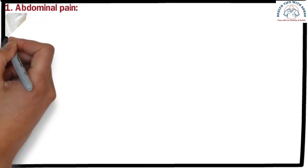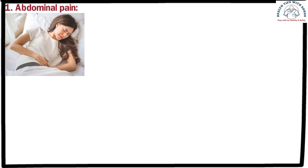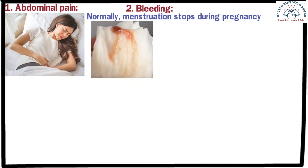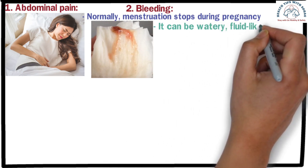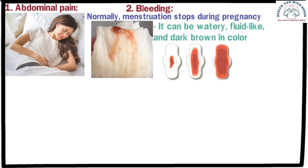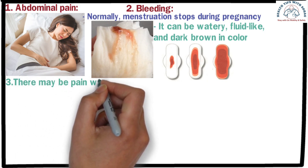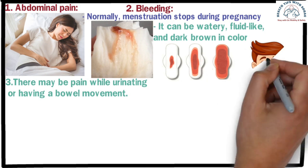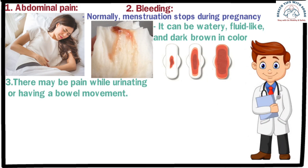Early symptoms include: 1. Abdominal pain — there can be mild to severe pain on one side of the lower abdomen, which may persist or suddenly become intense. 2. Bleeding — menstruation stops during normal pregnancy, but in ectopic pregnancy, vaginal bleeding can occur. This bleeding is different from menstrual blood; it can be watery, fluid-like, and dark brown in color. Sometimes light spotting may also occur, often accompanied by abdominal pain. 3. There may also be pain while urinating or having a bowel movement. Just because there is abdominal pain or bleeding during pregnancy doesn't necessarily mean it's an ectopic pregnancy — many other reasons can cause these symptoms. If they occur, it's important to consult a doctor immediately.